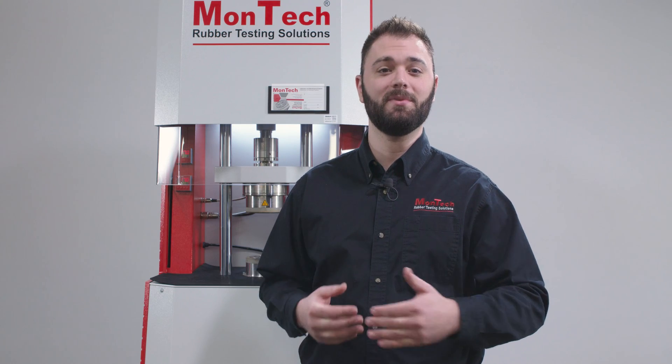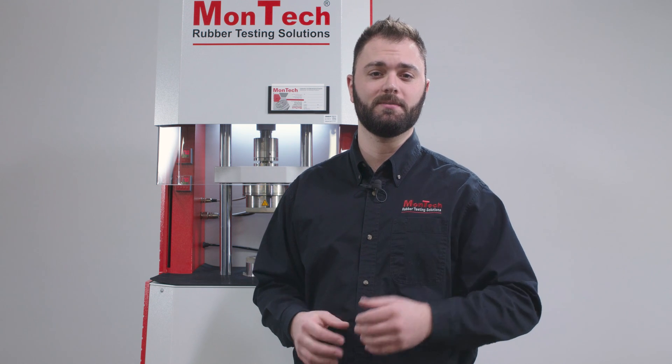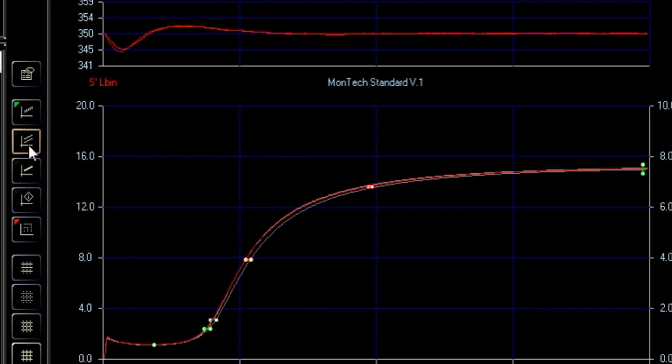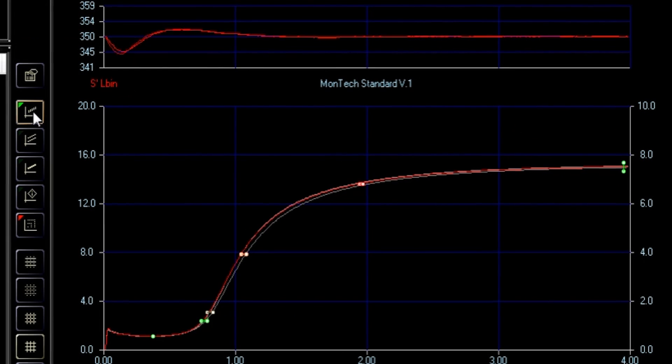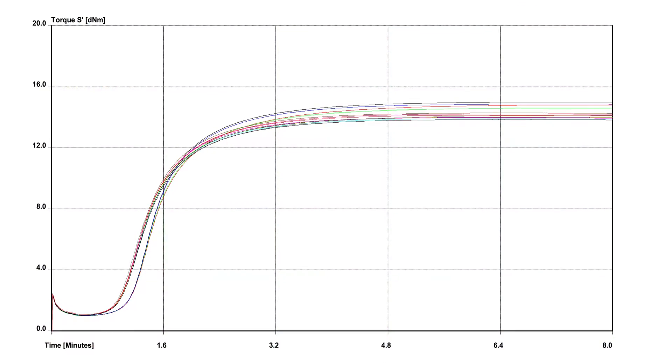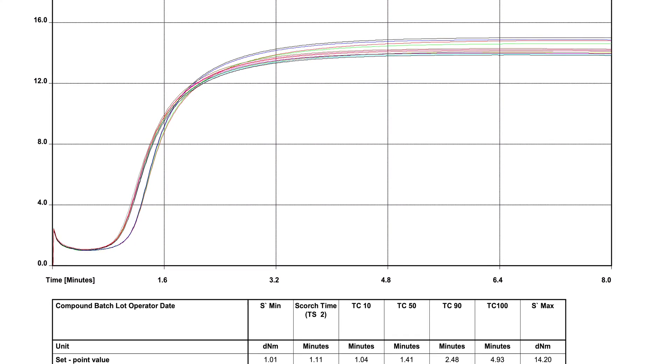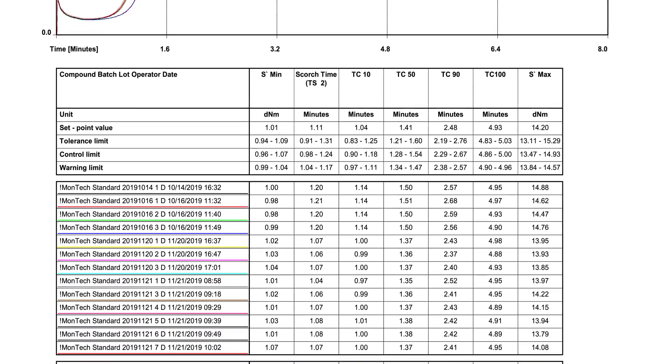These data points can be used in quality management to ensure compounds are within the limits of production specifications. Gates can be set up in MonControl's test parameters to automatically determine if a material has passed or failed meeting the thresholds required for production. Furthermore, statistics from multiple tests can be examined at once to look at uniformity and data distribution among different batches of material.